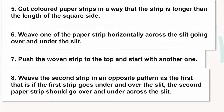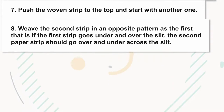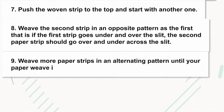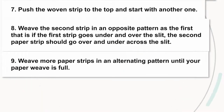the second paper strip should go over and under across the slits. Step nine: weave more paper strips in an alternating pattern until your paper weave is full.